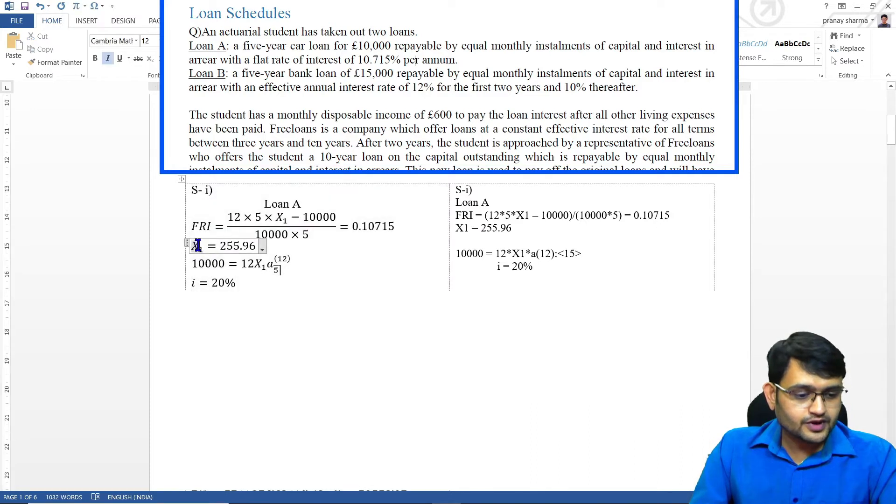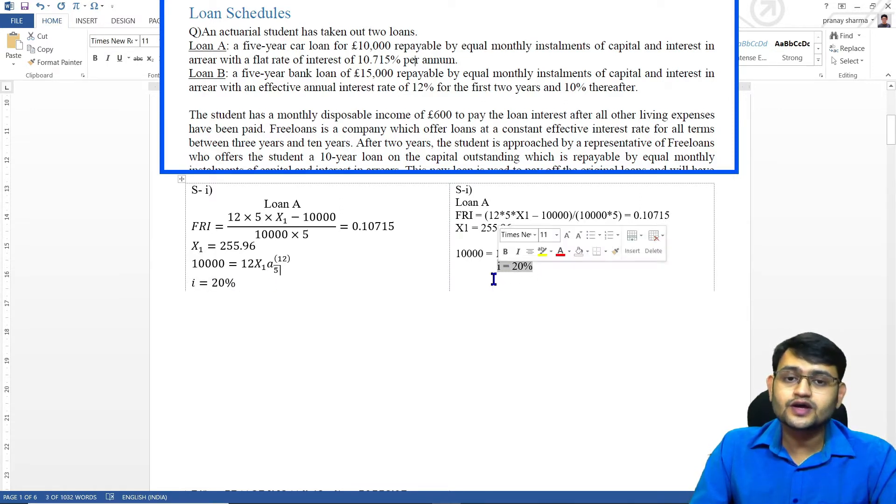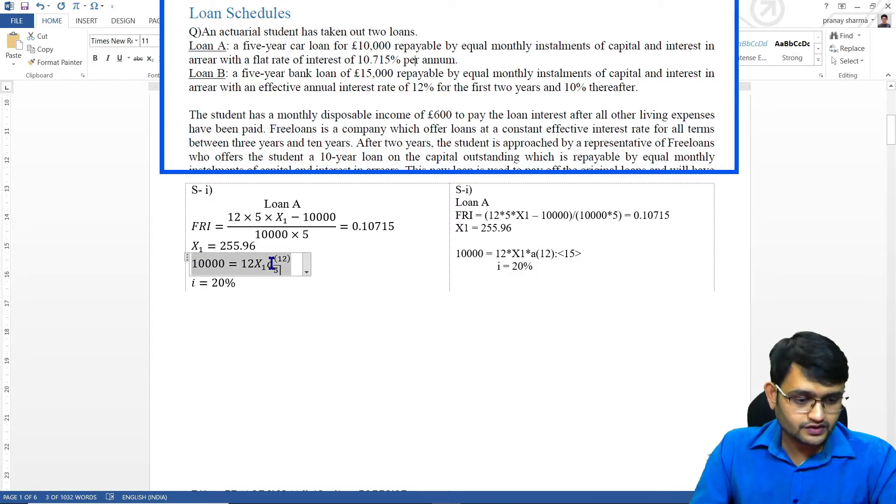So our monthly repayment for loan A is x1. Then we have also calculated the equivalent rate of interest that we will require later on as well. So here again our basic formula of loan, here I have written basic formula of loan annuity.